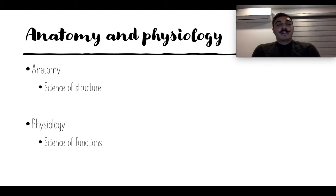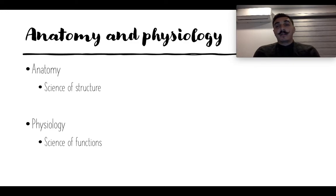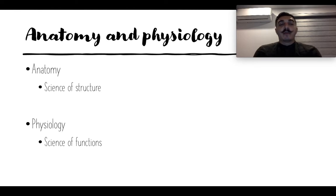To understand what this class is really about, we need to break down the two words: anatomy and physiology. Anatomy is just the science of structure — we're going to talk about the structure of bones, muscles, and the different organ systems. We're also going to talk about the physiology, which is the function of each one of those organs, organ systems, cells, or proteins. We really want to learn about the structure and the function of the body.